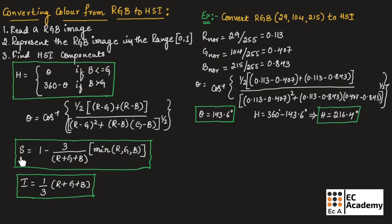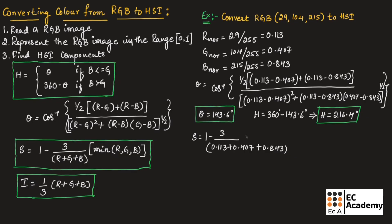Now let us find the value of saturation using the formula. Substituting the RGB values: S equals 1 minus 3 divided by (0.113 plus 0.407 plus 0.843) multiplied by the minimum value among R, G, and B. The minimum value is 0.113. Simplifying this gives saturation equal to 0.752.